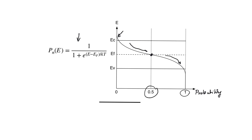This value, EF, is actually important because it is one of the parameters of the Fermi-Dirac function. The Fermi-Dirac function has two parameters: temperature T and this energy level EF. EF is called the Fermi level, and it is critically important because it is a good indicator of the types and concentrations of charged carriers in a material.